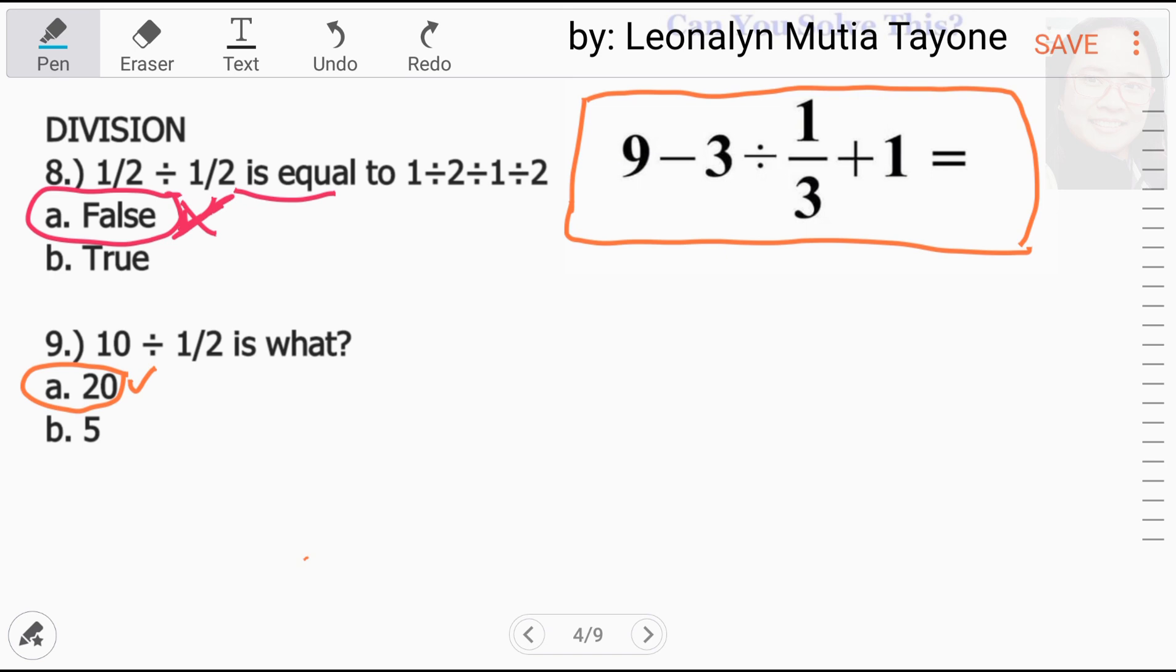So, para ma-liwanagan kayo doon, kailangan nyo talagang i-review or panuorin yung part 1 nito. Kasi hindi ko na yun uulitin. Ngayon, isolve na natin ito. Ang nanditong mga operations ay subtraction, division, meron tayong fraction, so fraction line, at addition, meaning more than one ang operations na nandito. So, we will follow order of operations.